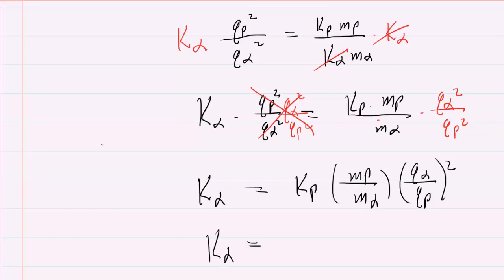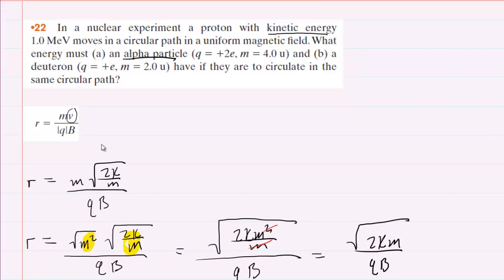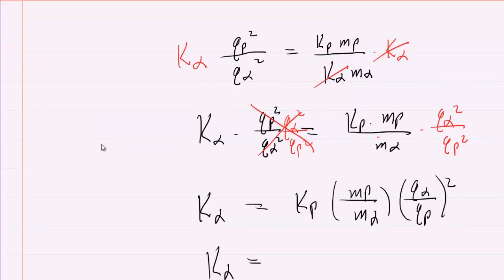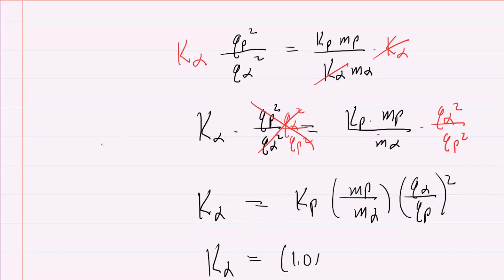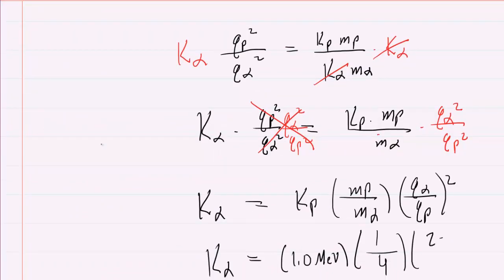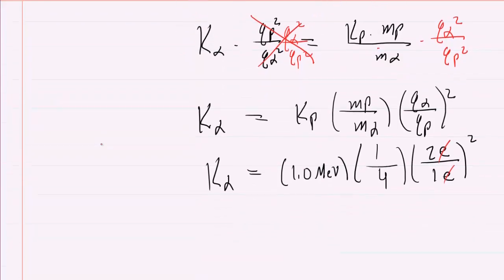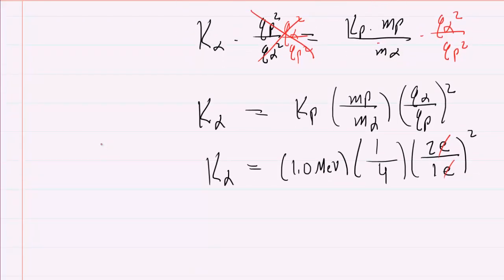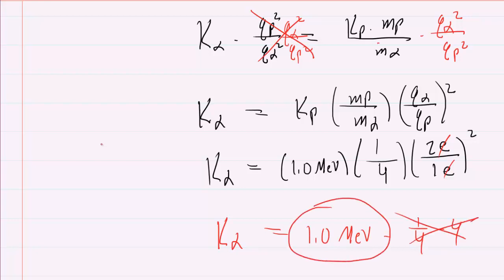The kinetic energy of the proton was given in the question as 1.0 mega electron volt. The mass of the proton is 1 atomic mass unit, the mass of the alpha particle is 4 atomic mass units. The charge on the alpha particle is 2e, and the charge on a proton is 1e — don't forget to square it. The e's cancel, so we square 2 to get 4 and multiply by one-fourth, which cancels out. So it's 1 MeV times one-fourth times 4, and those cancel. The answer to part A is 1 mega electron volt.